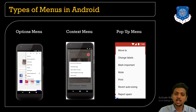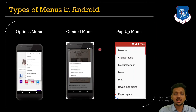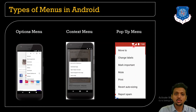The context menu means that when you long-press on some item, one menu opens up — that is known as the context menu. The pop-up menu means when you click on some button and a menu pops up on your screen, that is known as the pop-up menu.